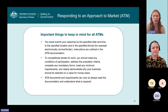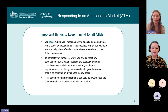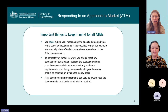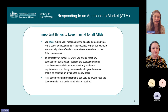Some important things to keep in mind for all approaches to market: you must submit your response by the specified date and time, to the specified location, and in the specified format — which could be electronically via AusTender, but instructions will be outlined in ATM documentation. To competitively tender for work, meet any conditions of participation, address the evaluation criteria, complete any mandatory forms, meet any minimum requirements, and clearly demonstrate why your business should be selected on a value for money basis. ATM documents and requirements can vary, so always read the documentation and understand what is required before getting started on your response.